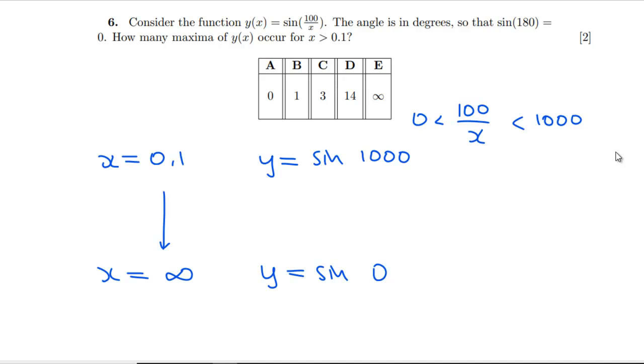So x will take, well, 100 over x will take all values from 0 to 1000. Where do we get maxima? In degrees, we're going to get one at 90 degrees, then one at 450, 360 later, then 360 after that is 810, and then we're out of range. So it's going to be three. Excellent.